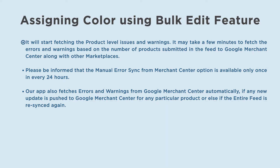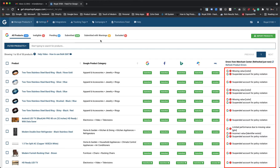It will start fetching the product level issues and warnings. It may take a few minutes to fetch the errors and warnings based on the number of products submitted in the feed to Google Merchant Center along with other marketplaces. Please be informed that the manual error sync from Merchant Center option is available only once every 24 hours. Our app also fetches errors and warnings from Google Merchant Center automatically if any new update is pushed for any particular product, or if the entire feed is re-synced. Once done, we will be able to see the error and warning messages against the respective products within our app under the Errors from Merchant Center column.